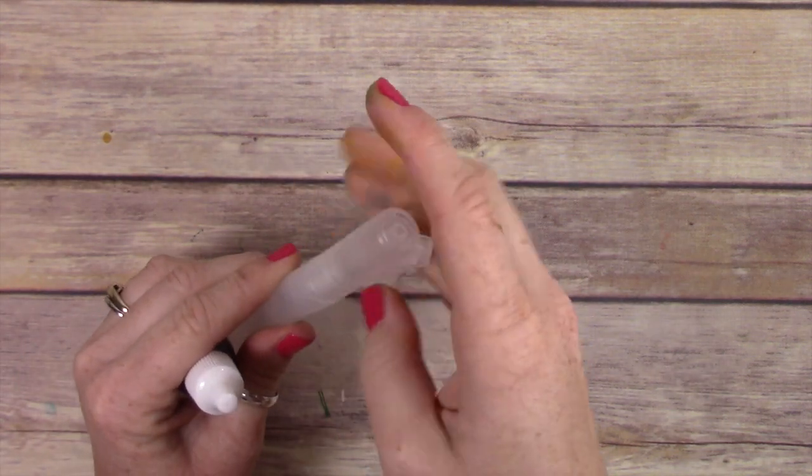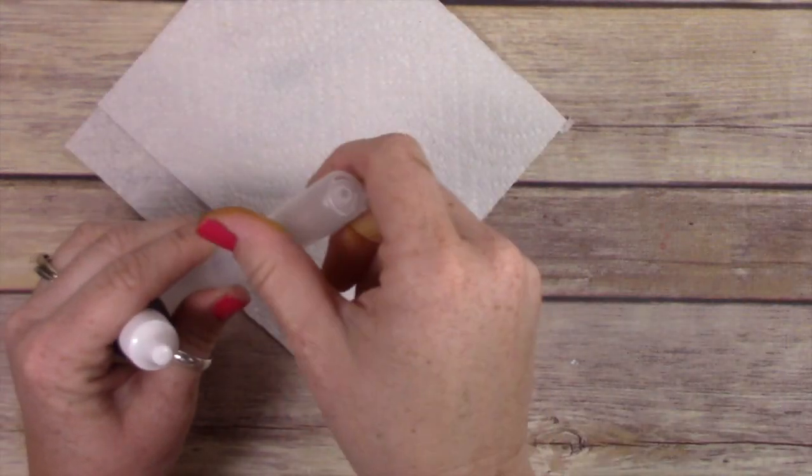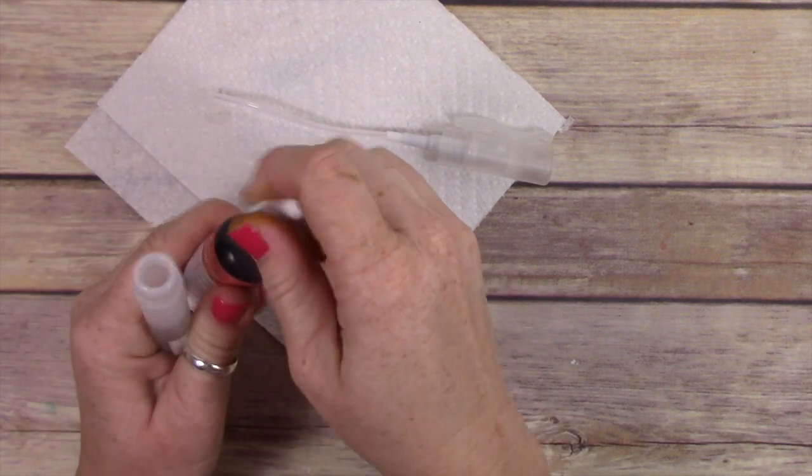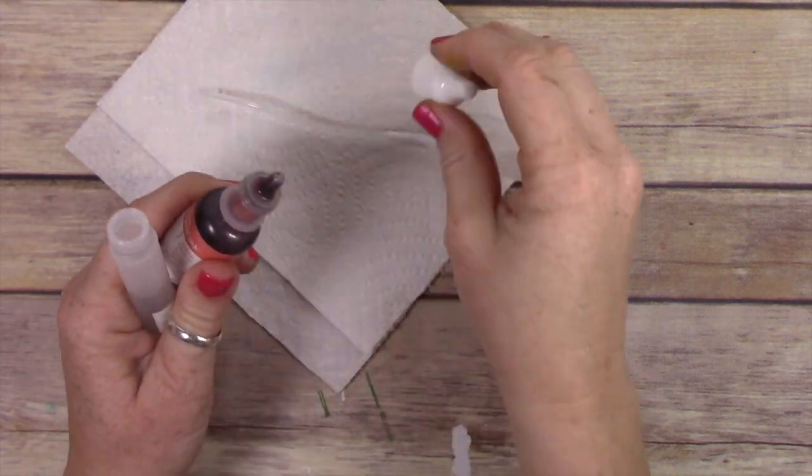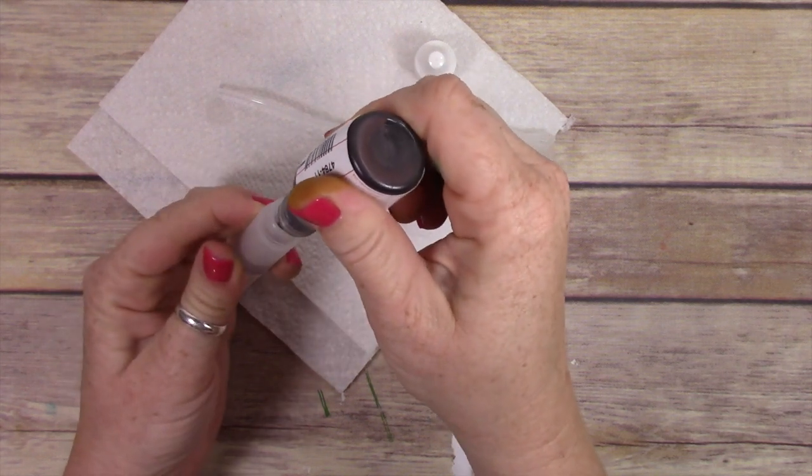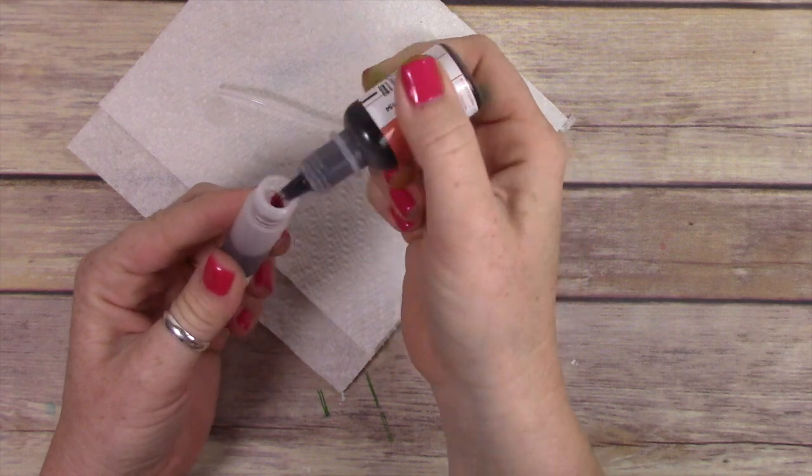I've already filled this little tube with rubbing alcohol, so what I'm doing is I'm just taking the lid off and I'm taking my Calypso Coral reinker and I'm just going to add a bunch of drops of it inside with the rubbing alcohol.